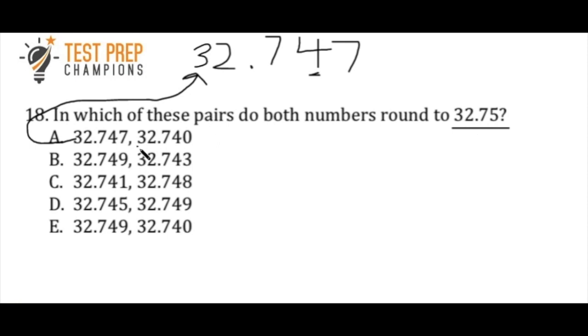Okay, so if we look at the second number in the pair, which is 32.74, now let's look to the number directly to the right of the 4. Now, is it a 5 or greater? No, it's not. It's less than 5, so therefore this won't round up, and this would only round to 32.74. So A is out via process of elimination.